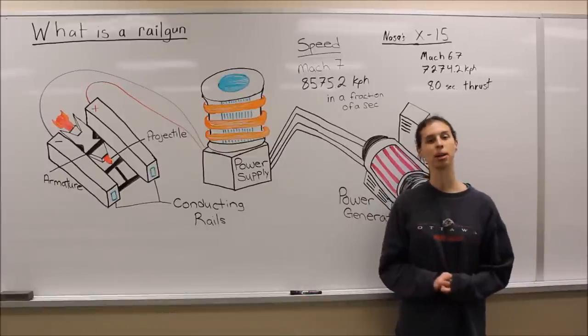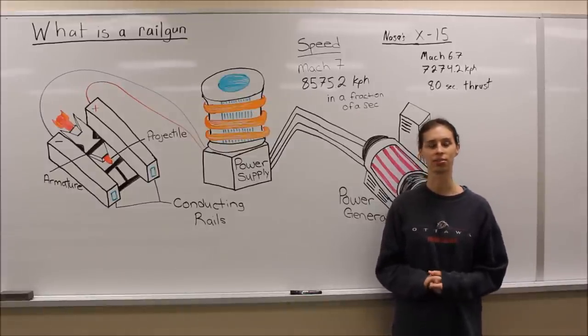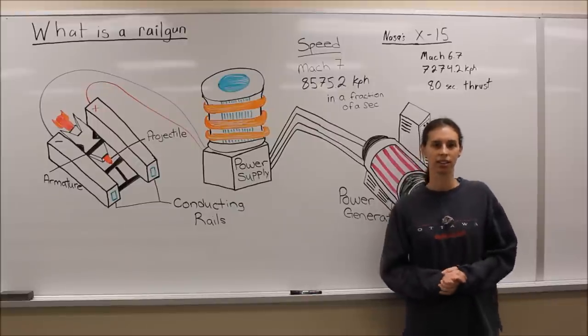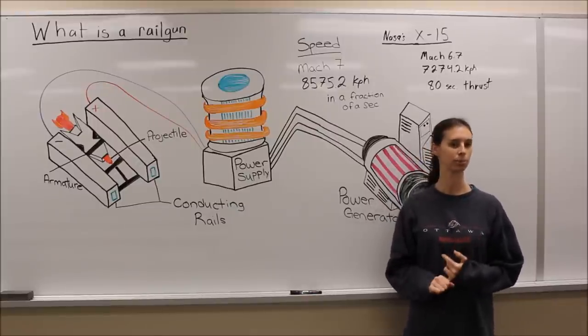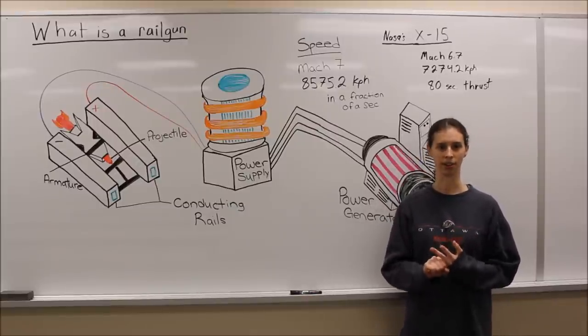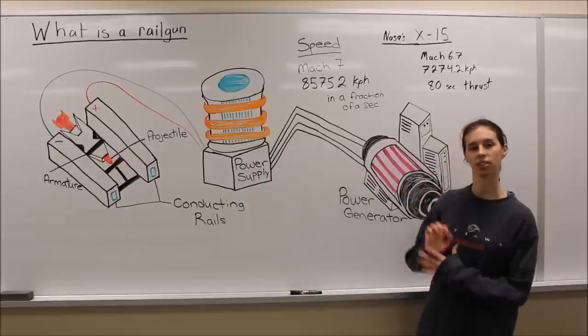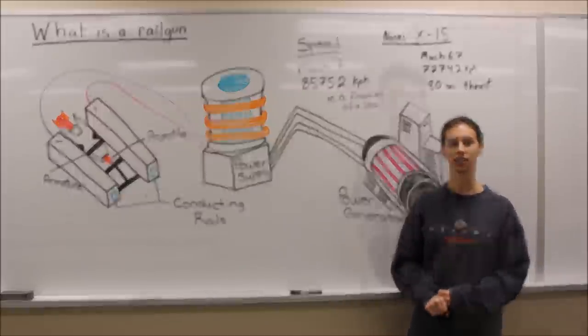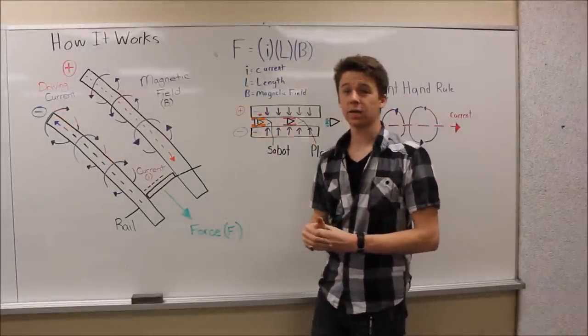The reason why the rail gun might be found or seen in the near future is because the military has plans to replace their missiles, which are very expensive and use gunpowder, with the rail gun, which is less expensive and does not need gunpowder.